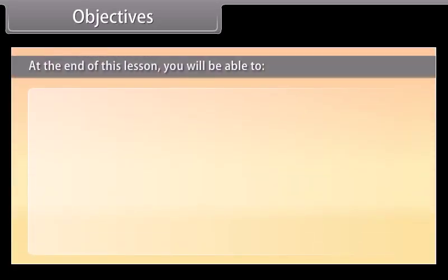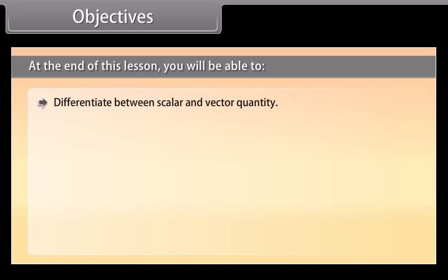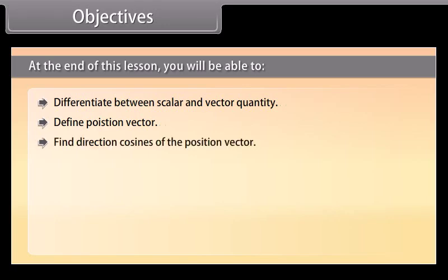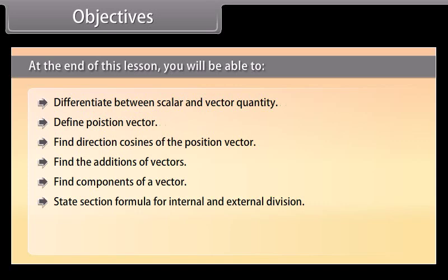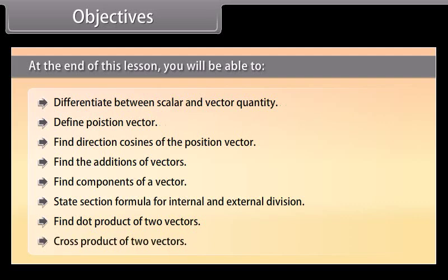Objectives. At the end of this lesson, you will be able to: differentiate between scalar and vector quantity; define position vector; find direction cosines of the position vector; find additions of vectors; find components of a vector; state section formula for internal and external division; find dot product of two vectors; and cross product of two vectors.